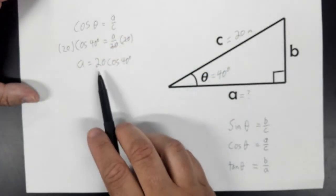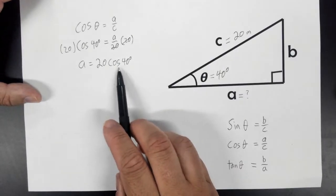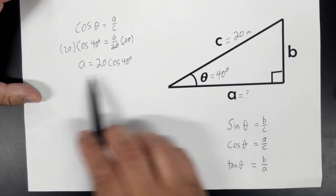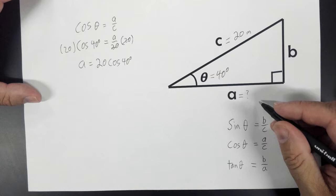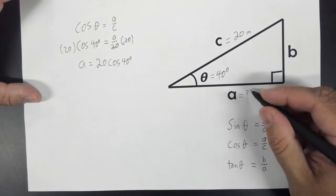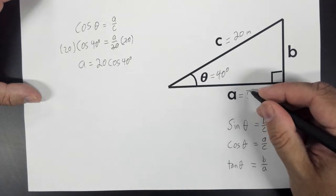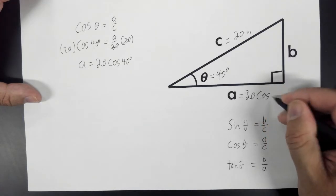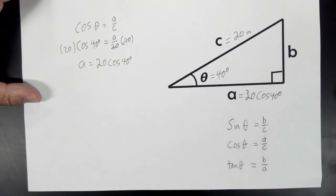You get A equals 20 times cosine 40. In a calculator, you just do 20 multiplied by whatever cosine 40 is. But on our tests, you don't have to put that in a calculator. You can just write it as 20 cosine 40, and that would be good enough.